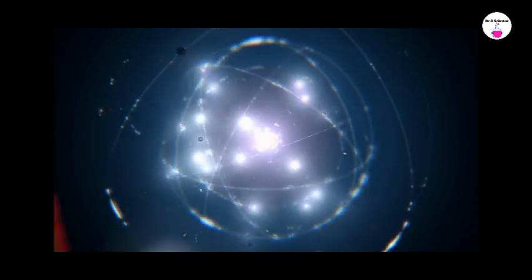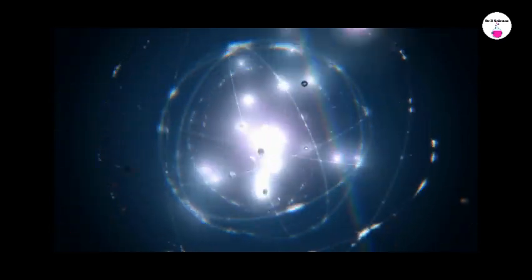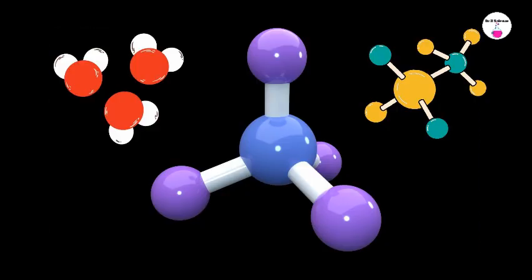Atoms and Molecules: Atoms are the smallest units of matter that retain the properties of an element. Molecules are formed when two or more atoms chemically bond together, and can be composed of the same or different elements.